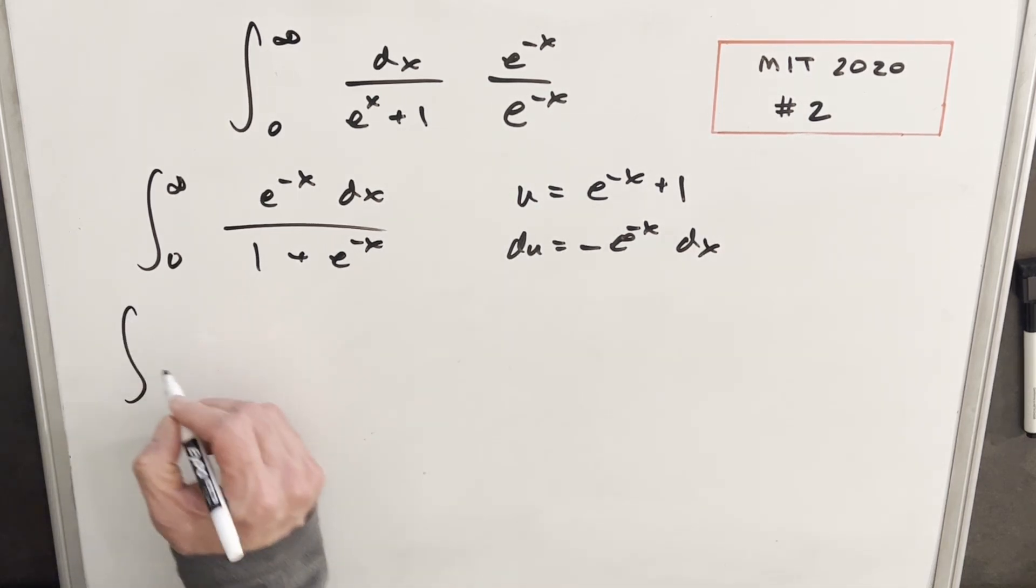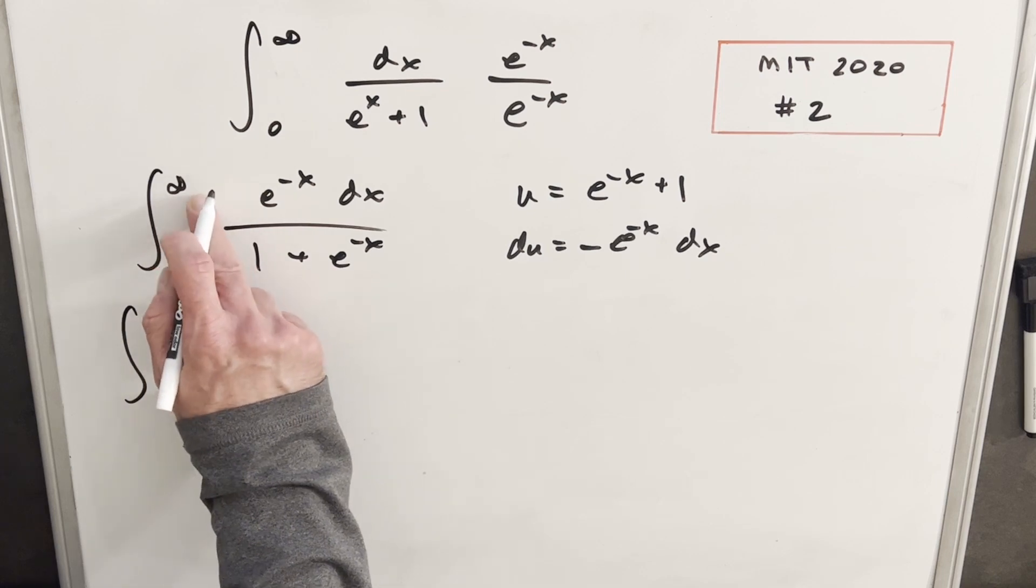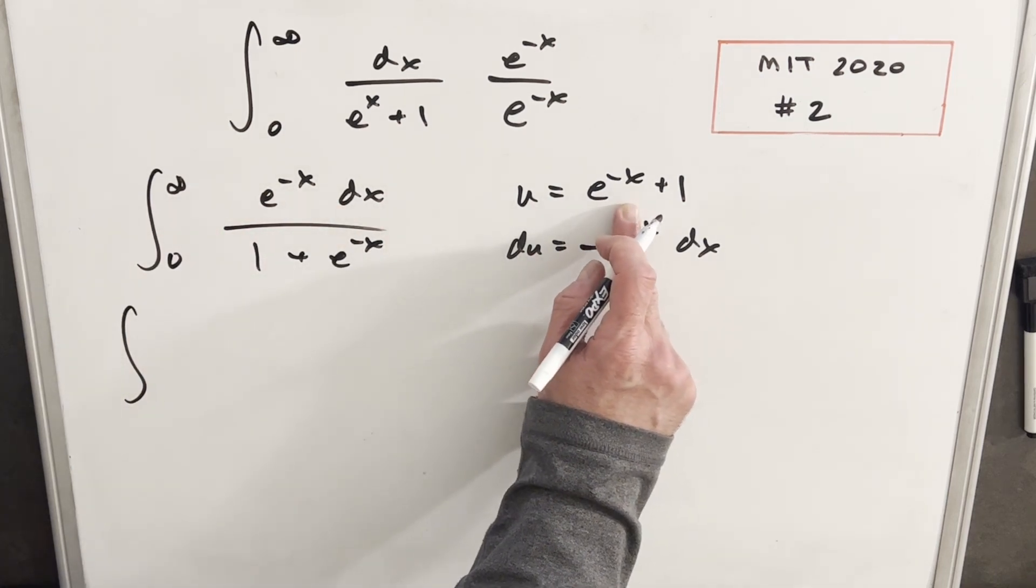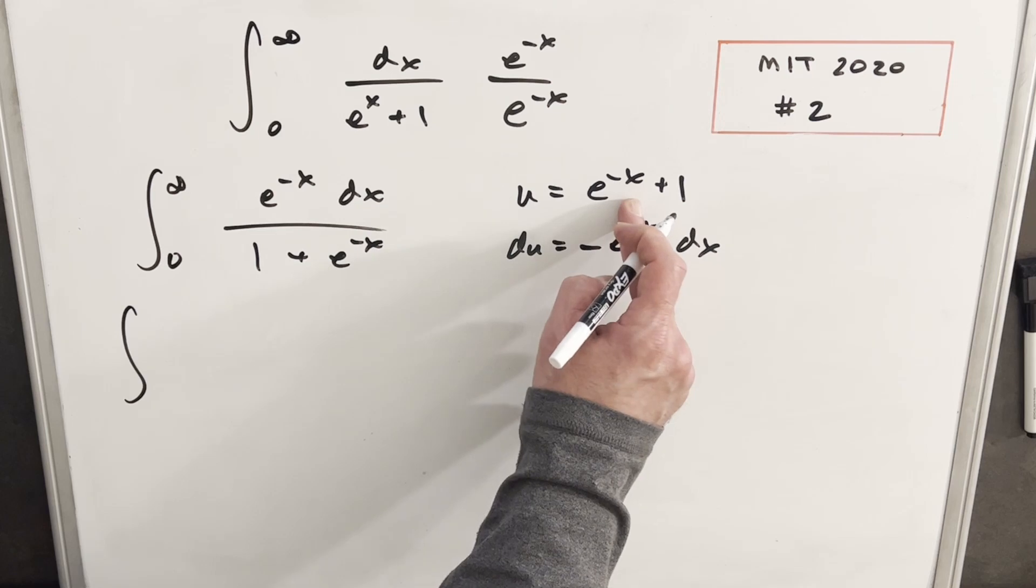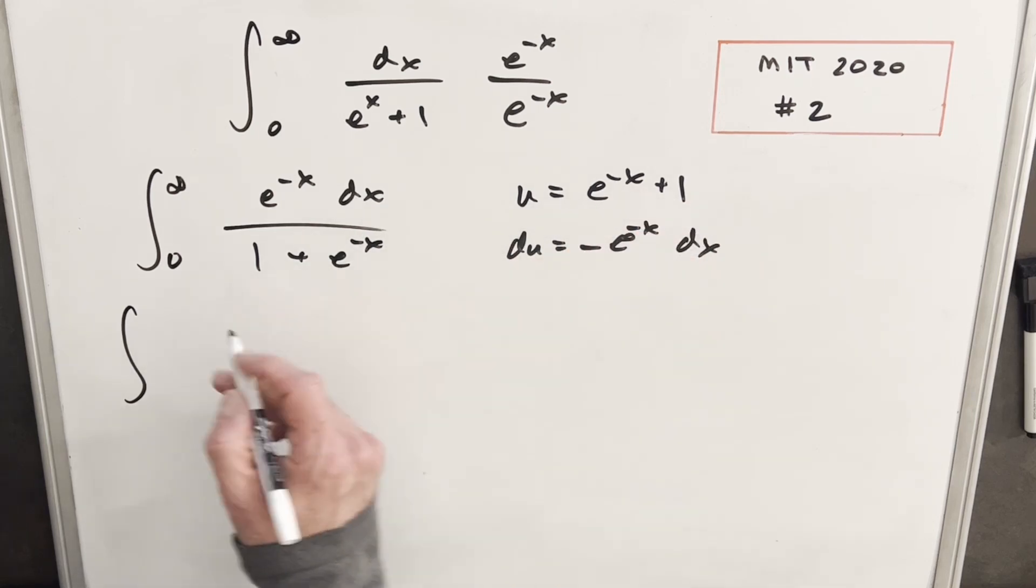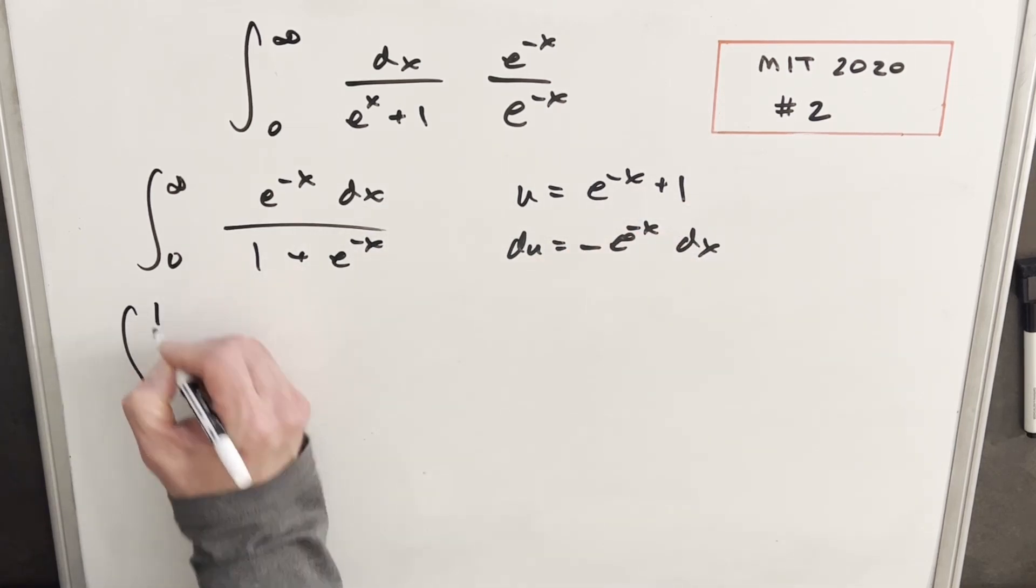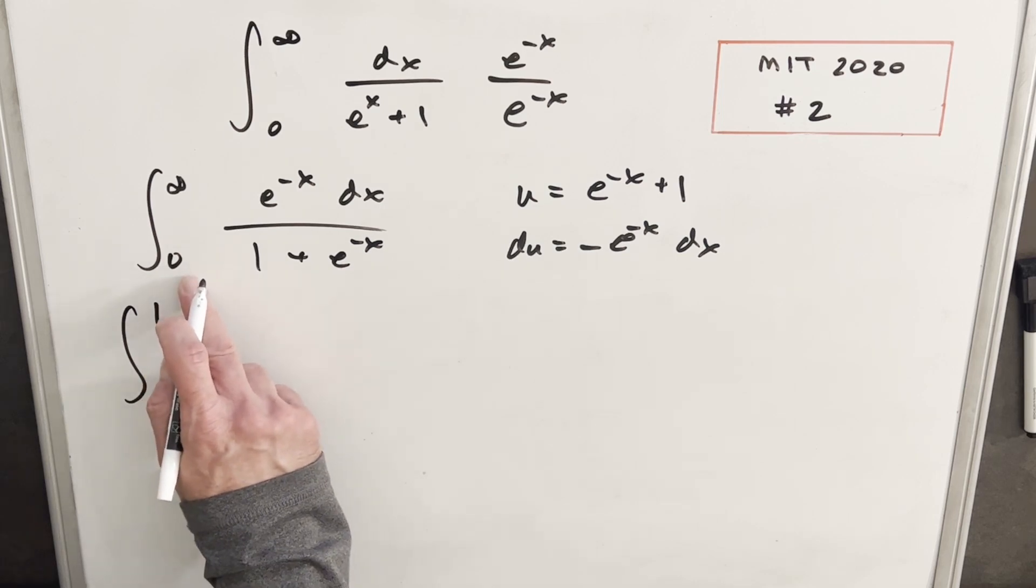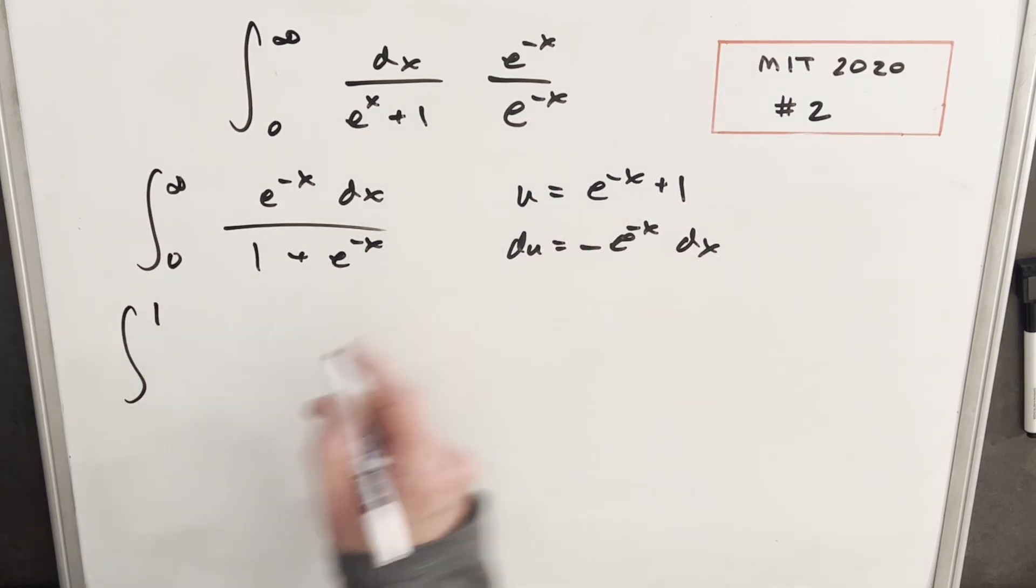So then let's make this substitution. So I'm going to plug, let's see what happens when we put infinity into this, into our x here. Well, we have e to the minus infinity. That part's going to zero. So our u is just going to be one. So we'll have one for our upper bound. And plugging a zero in here, we'll have one plus one, two.